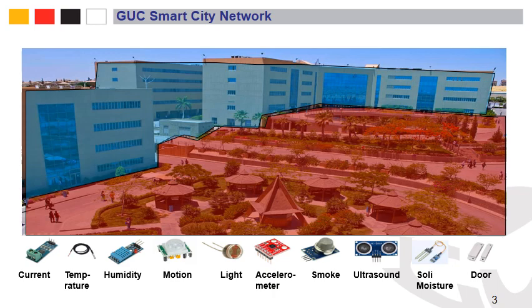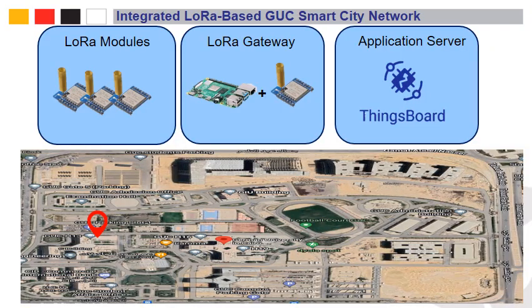Additional sensors include soil moisture sensors for agriculture and greenery on the GUC campus, and door sensors for activity detection — whether a door is open or closed. These are just examples of sensors that can be used in different use cases. We would like to have a system with the capability to support any use case within the scope of the GUC.